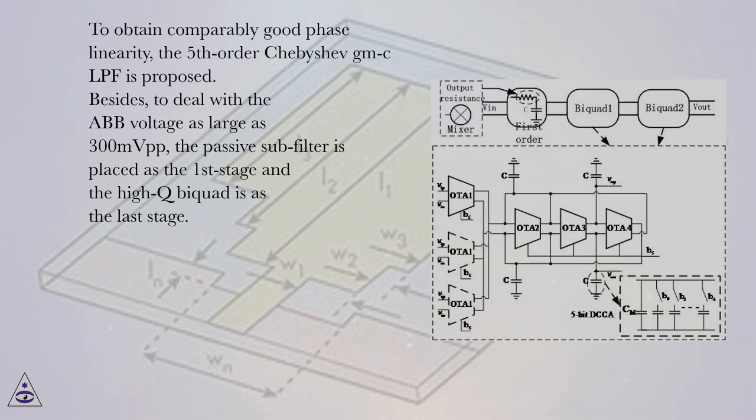Besides, to deal with the ABB voltage as large as 300 mVpp, the passive sub-filter is placed as the first stage and the high-Q biquad is as the last stage.